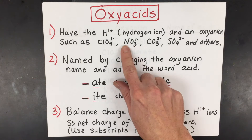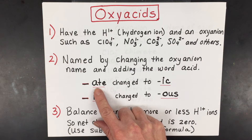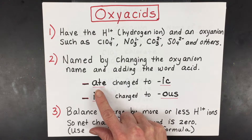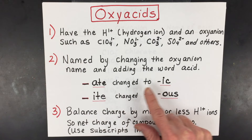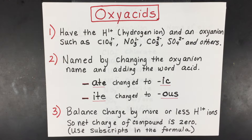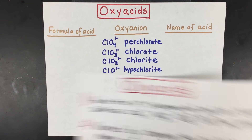For example, if you have nitrate, that ion when it turns into an oxyacid will turn into nitric acid. You also balance the charge by adding more or fewer hydrogen ions so that the net charge is zero, and that is done using subscripts in the formula.